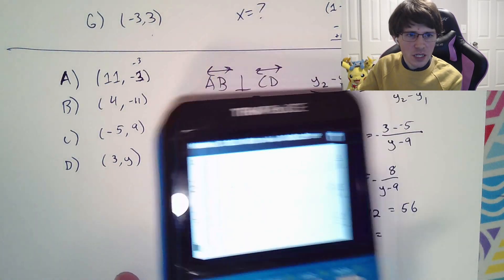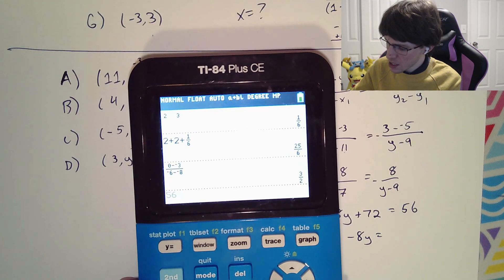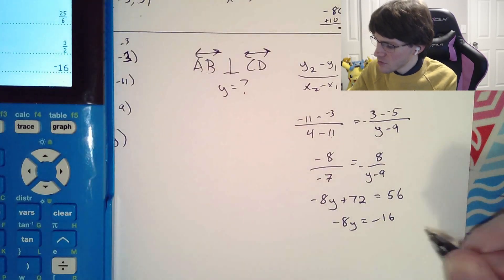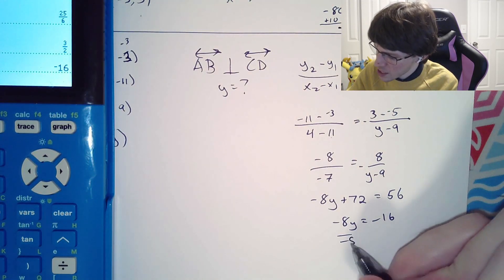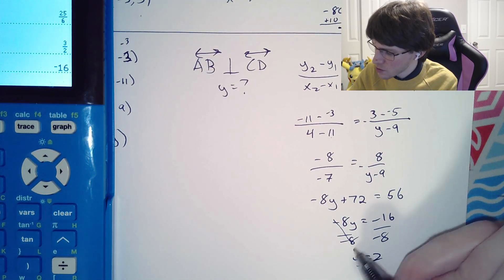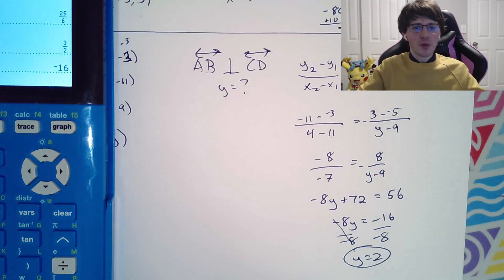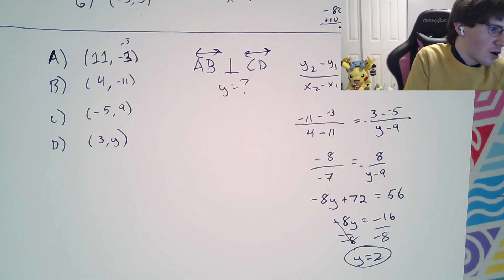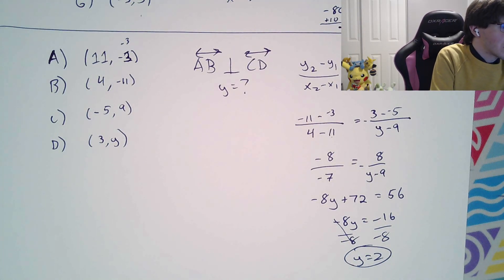Then, using maybe a switcheroo, negative 8y is equal to 56 minus 72. Use our calculator, because I am getting lazy here. 56 minus 72, and that'll give you negative 16. Divide both sides by that negative 8. Cross them out, and you get y is equal to 2. Boom! We finished it up. We got our problem done. Hopefully this was useful to you, and have a great rest of your day.